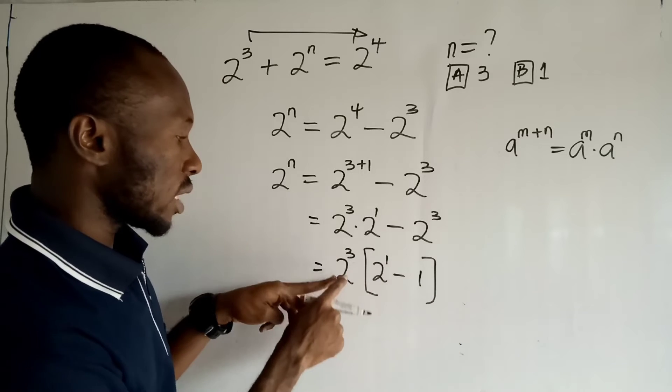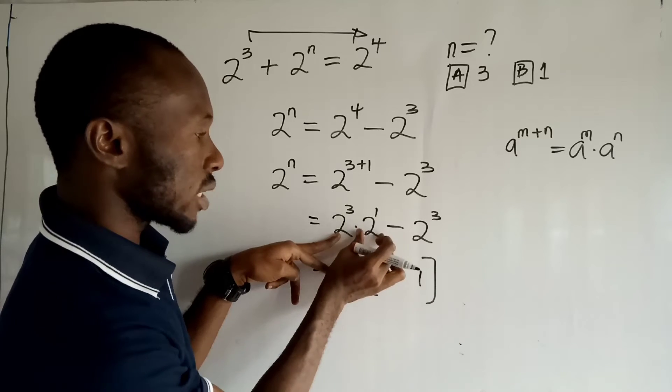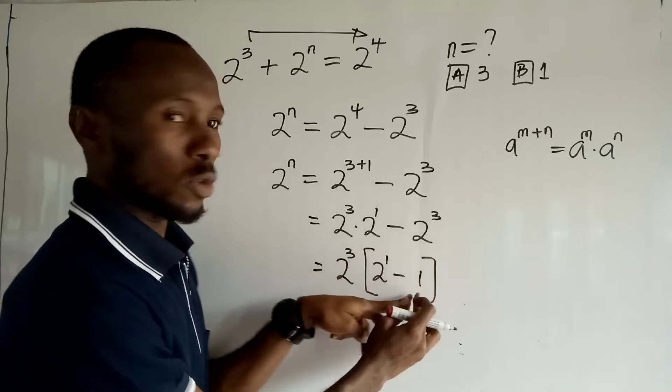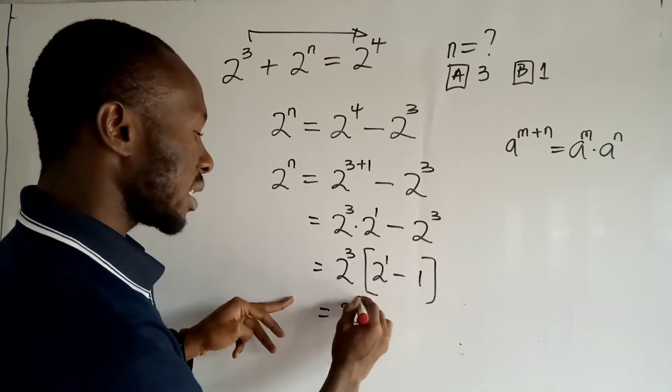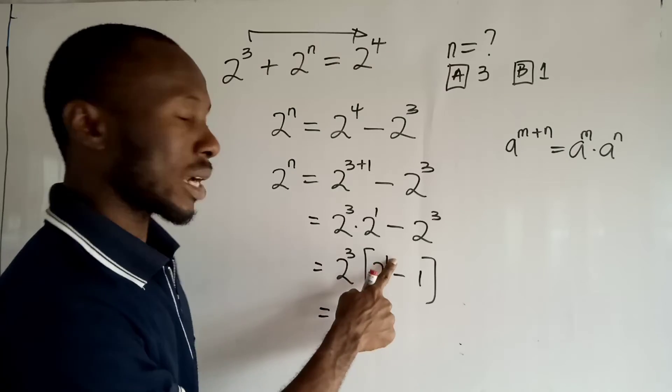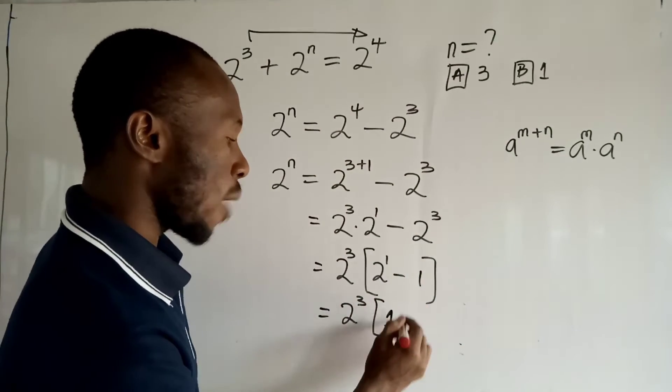Right? Because, you know, if this guy divides this guy, you will be left with this one. And if this guy divides this guy, you only have 1. So the next thing you want to do, you have 2 to the power 3 times, what is 2 to the power 1? That is 2. Then 2 minus 1 is just to the power 1.